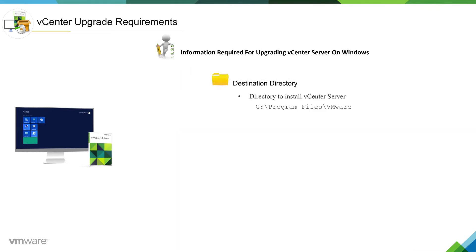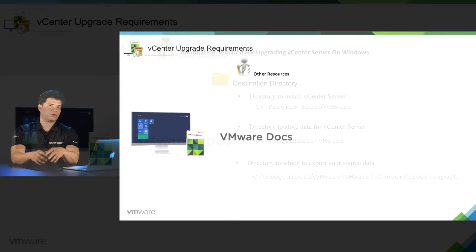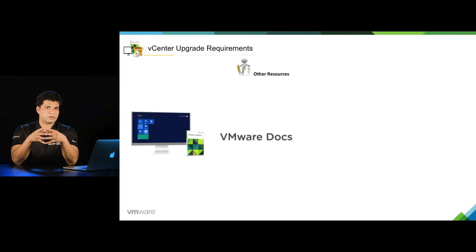You should also know the destination directory where your vCenter server was installed, the directory to store data for vCenter server, and the directory to which you will export your source data. These are the generic information items you must know before you proceed with your vCenter server upgrade.